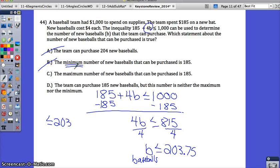The maximum number of new baseballs they can purchase is 185. Well they could buy 203 so that's obviously not the max. The team can purchase 180 new baseballs but this number is neither the maximum nor the minimum. That is correct. They can buy 185. They could also buy 190 or 120. None of those numbers are the max or the min. Then your answer is D.